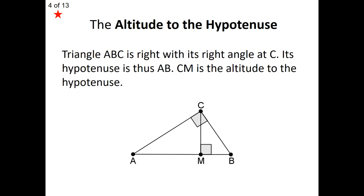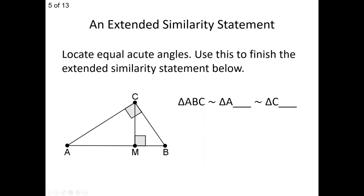Something amazing happens when we drop that altitude to the hypotenuse. We produce another right angle, and because of that, we actually produce two other right triangles. The entire right triangle ABC is now cut into two smaller right triangles: ACM and BCM. Those two smaller right triangles are, in fact, similar to the original right triangle ABC — and in fact, all three are similar to each other.